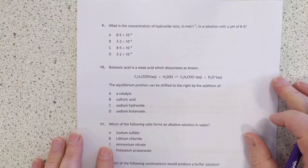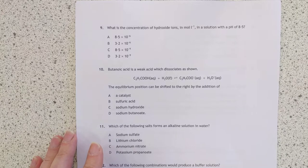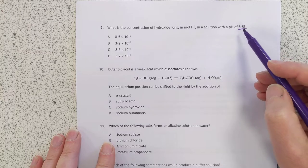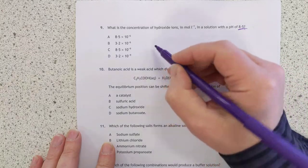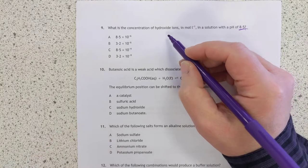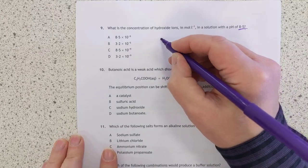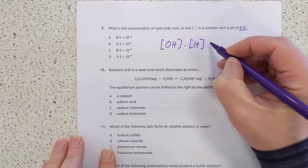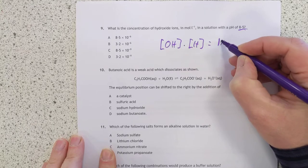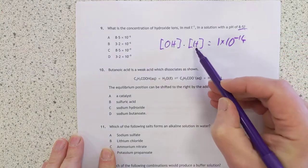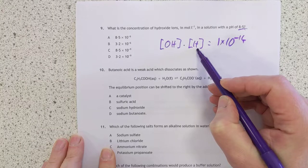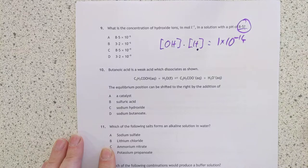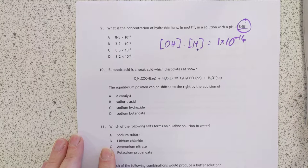Number nine. What is the concentration, maybe a calculator time, of hydroxide ions in a solution with a pH of 8.5? Right. Oh, concentration of hydroxide ions. Nearly fell into the trap there. So concentration of hydroxide times concentration of hydrogen is equal to the water constant, which is 1 times 10 to the minus 14. This, we apparently don't know, but we can work it out because pH is negative log to the base 10 of the concentration of the hydrogen ions.